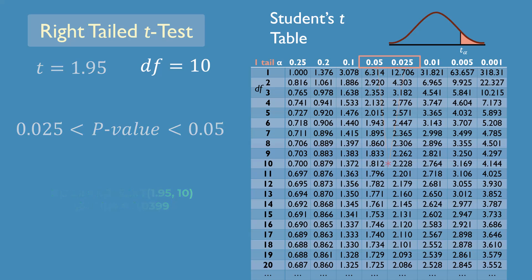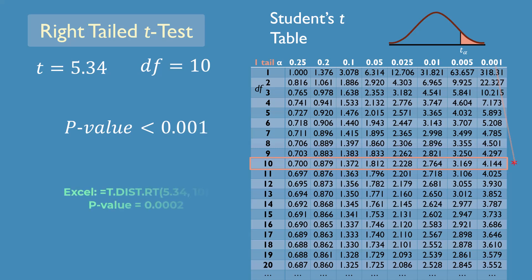Now, if the test statistic were 5.34, which is greater than all the critical values listed for df equals 10, we will say that the p-value is less than 0.01, or whatever the last alpha value we have listed here.